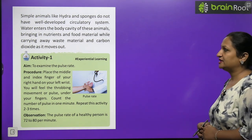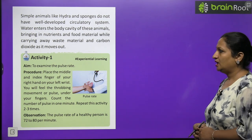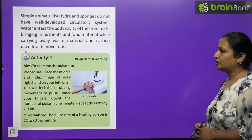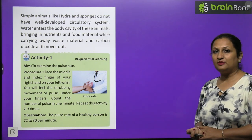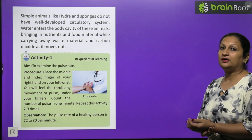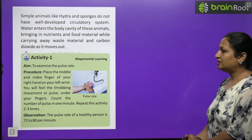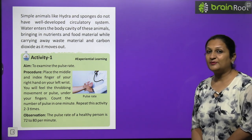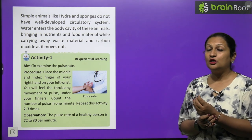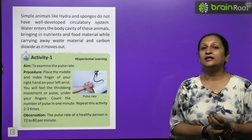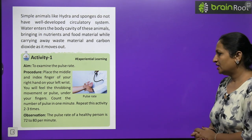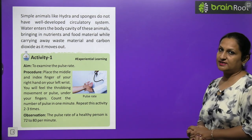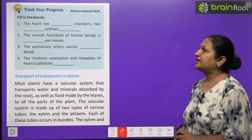Activity: to examine the pulse rate. Place the middle and index fingers on the right of your left wrist. You will be able to feel the throbbing movement — the pulse — under your fingers. Count the number of pulses in one minute. When you go to the doctor, the doctor holds your wrist and counts how many times it beats per minute. Repeat this two to three times. The pulse rate of a healthy person is 72 to 80 times per minute.